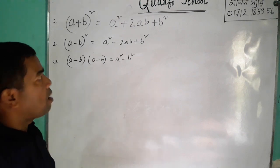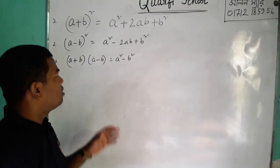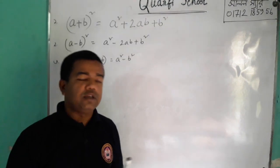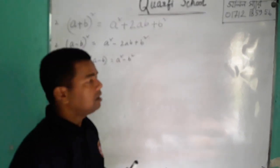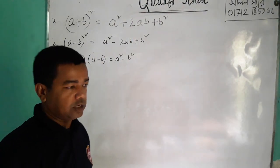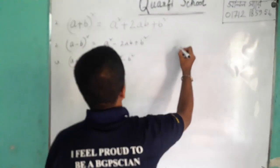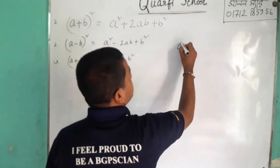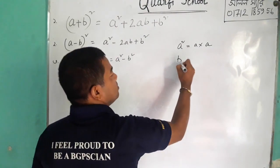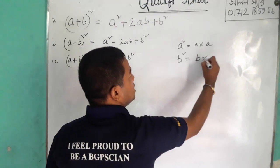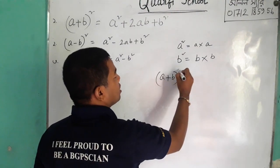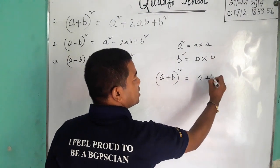This thing is very difficult. We can go to this paper. We can find that a square minus b square is equal to a plus b into a minus b. A plus b square is equal to a square plus b. We use a plus b, like a plus b into a plus b.